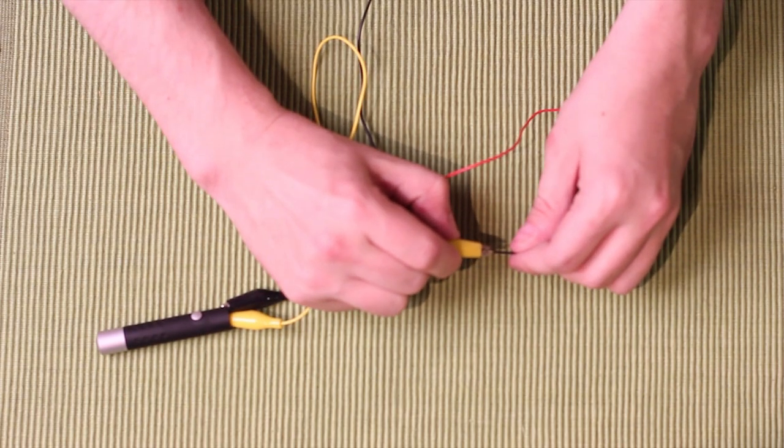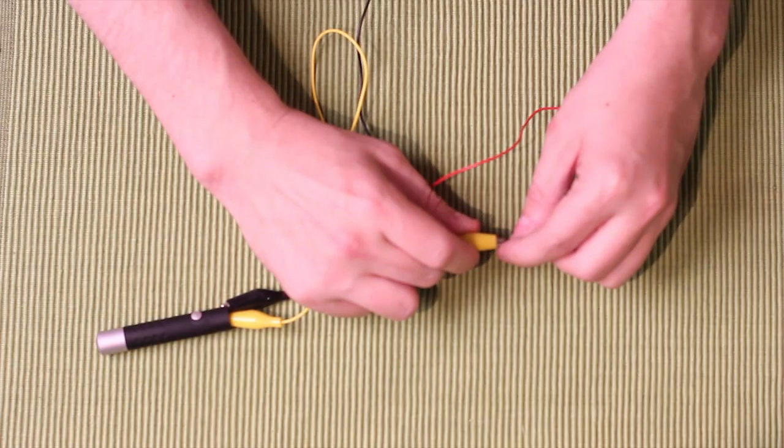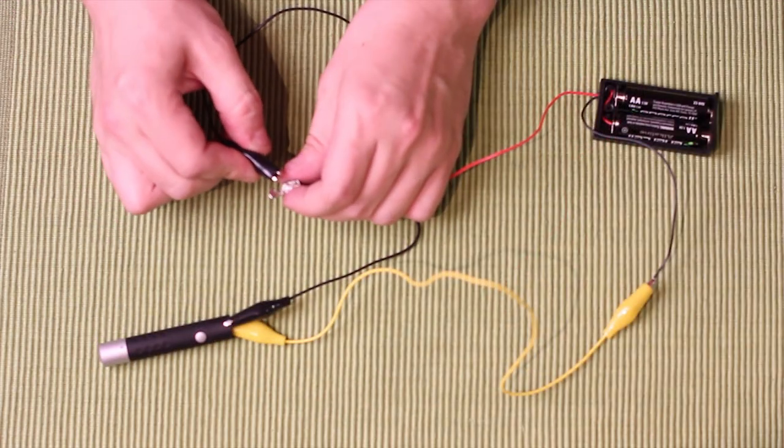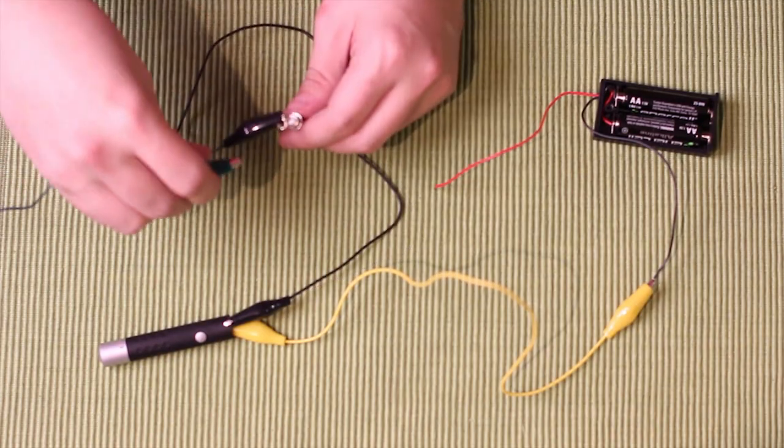First thing we need to do is hook up the prong from the laser up to the negative port on our battery holder. That's the start of our circuit. Now we need to move on and hook the positive end up to the small prong on our audio input jack.